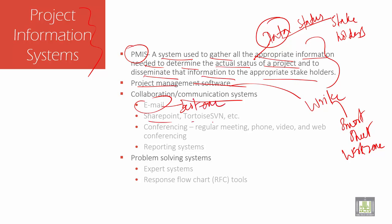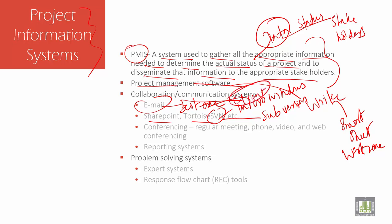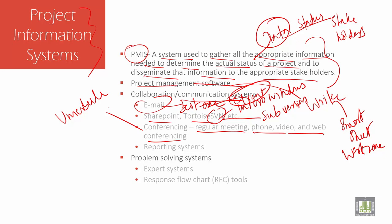Then you have SharePoint and TortoiseSVN. SVN is developed by Microsoft Windows — it is a shell extension. SVN means Subversion, and TortoiseSVN is a Subversion client. For conferencing, like regular meetings, phone, video, and web conferencing — web conferencing is used as an umbrella term for various types of online services.